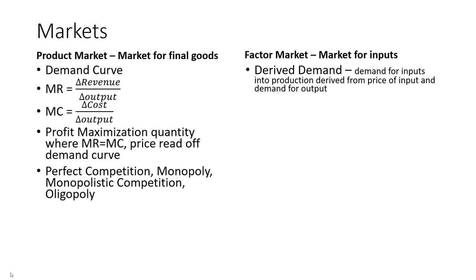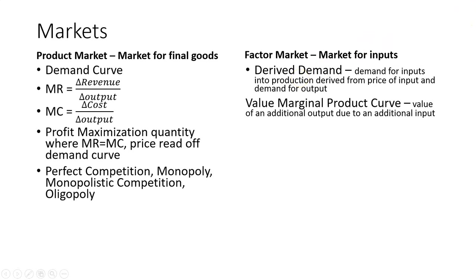The demand curve that we used in the product market is determined by the price of the good and the quantity of the good. But now, with a derived demand, we need to take into account more information, so we cannot use a demand curve in our analysis. We have to use something else — the value marginal product curve. The value marginal product is defined as the value of an additional output due to an additional input. This is where we pull together both the factor market and the product market.